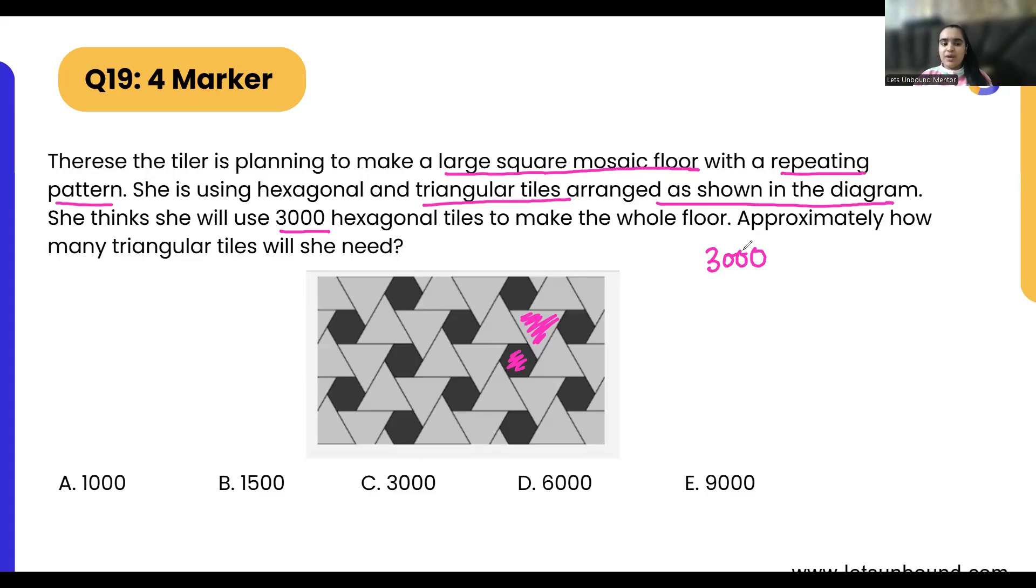Approximately how many triangular tiles will she need? What we have to do over here is this question is quite easy. If we see this hexagon, it is attached with one, two, three, four, five, six—one, two, three, four, five, six—six triangles.